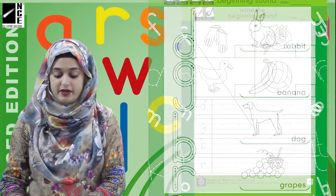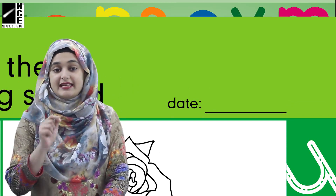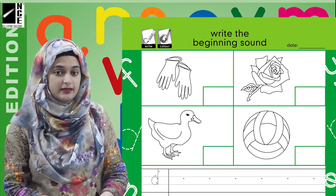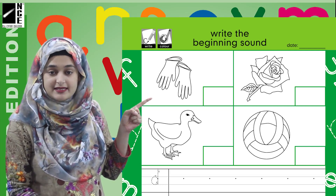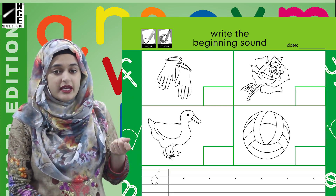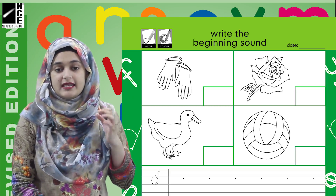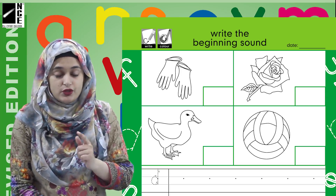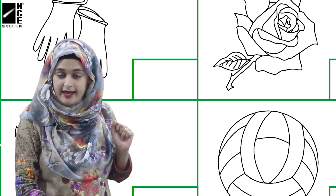Then we move to page number 31 and here comes the independent writing part. That starts with the date section, so write the date there. Then we have some pictures here too. This is a picture of gloves. And what do you think is the beginning sound of gloves? The beginning sound of gloves is G. So you will write G in this small square box over here.